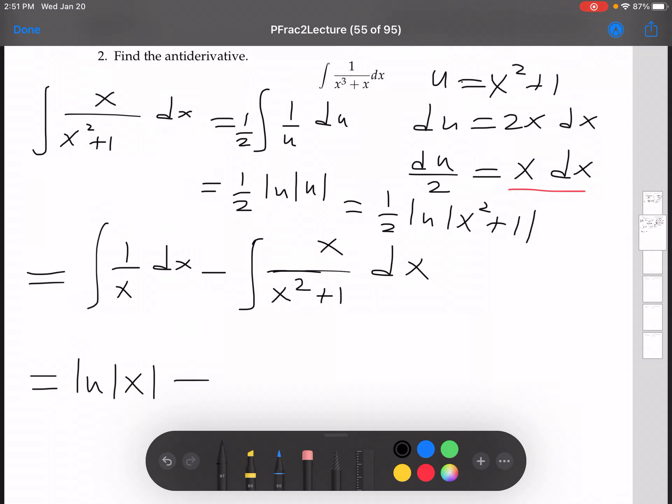So here we get minus 1 half ln absolute value x squared plus 1 plus c. And that's our integral.